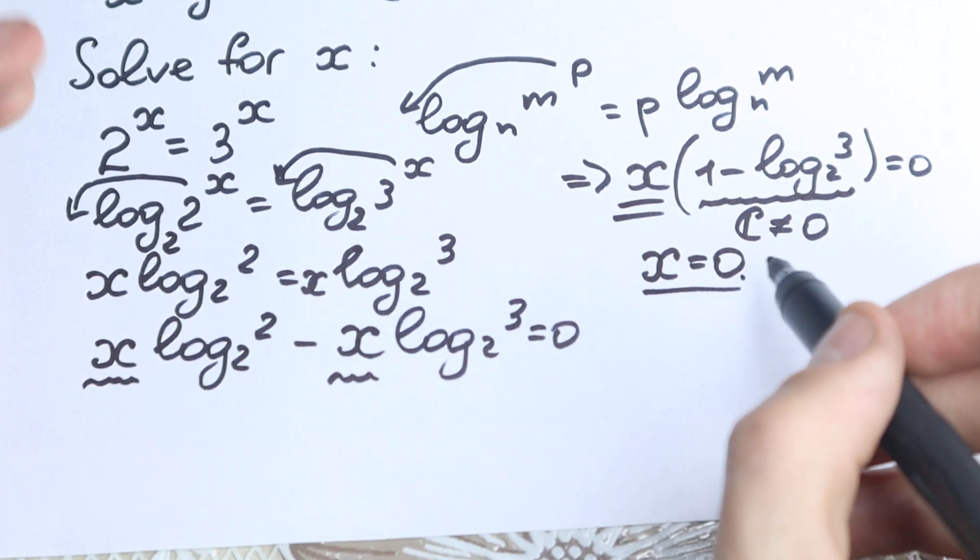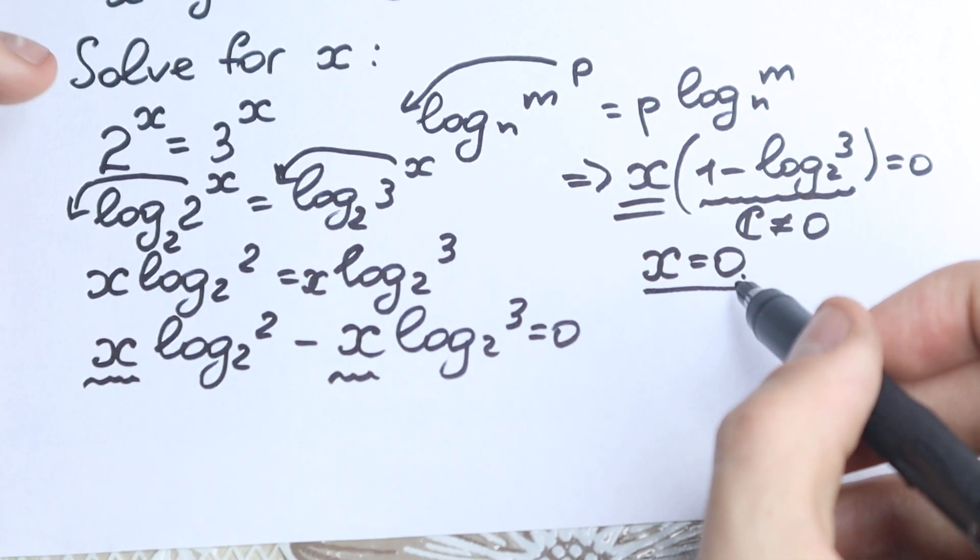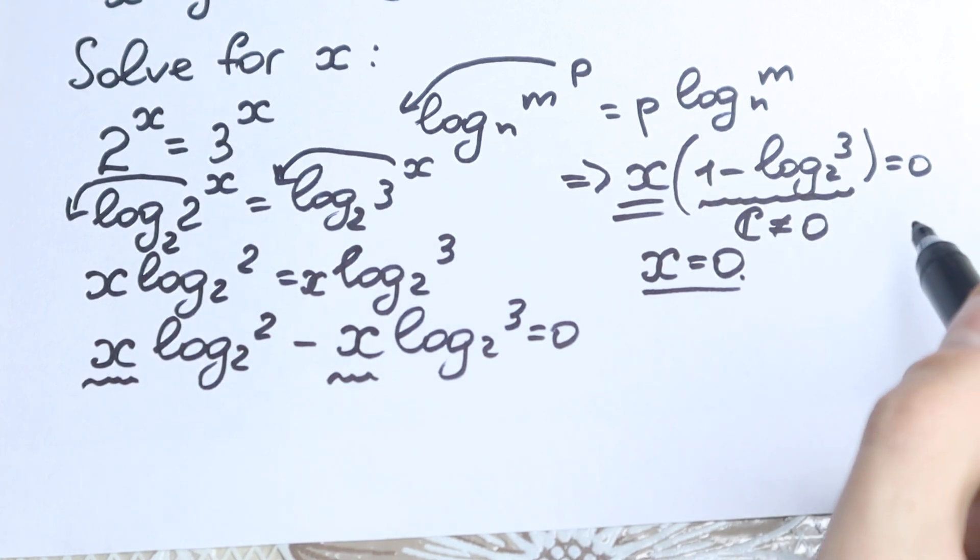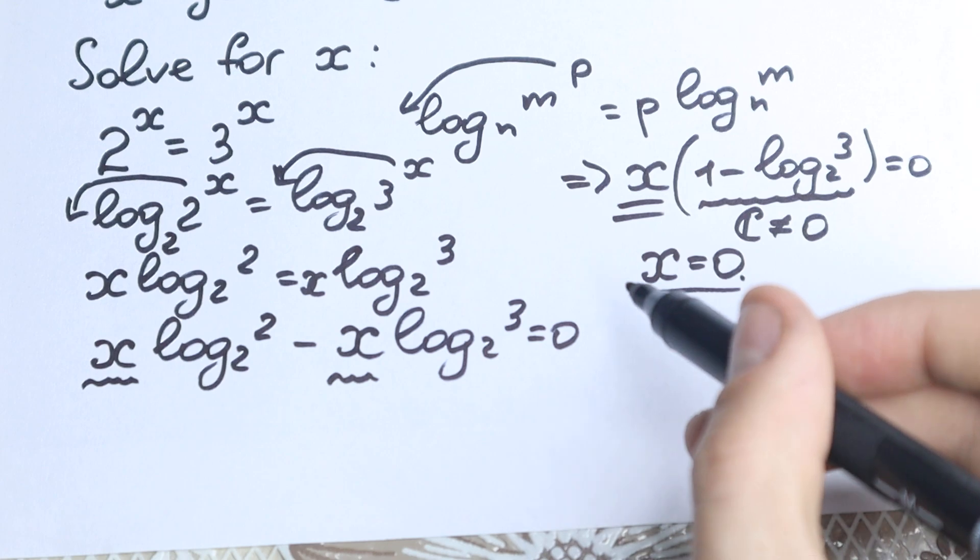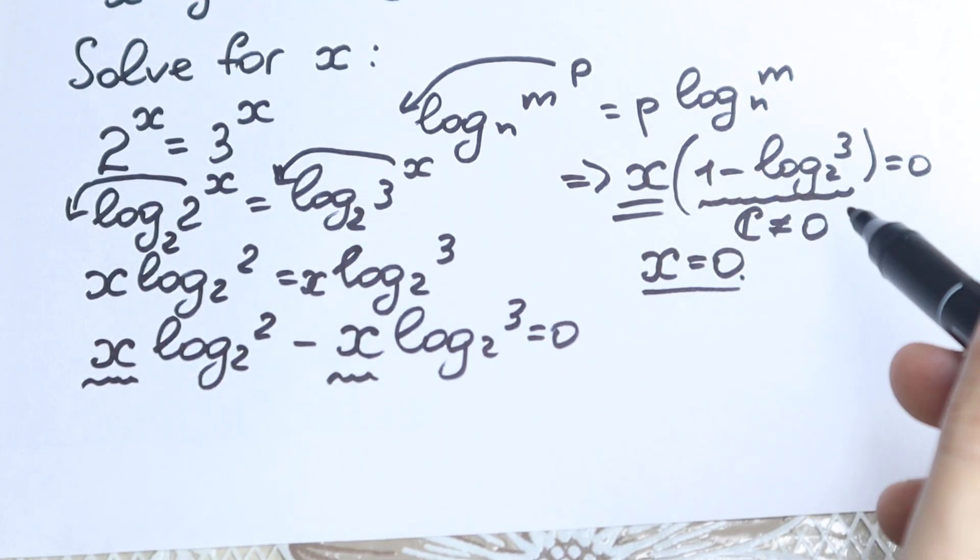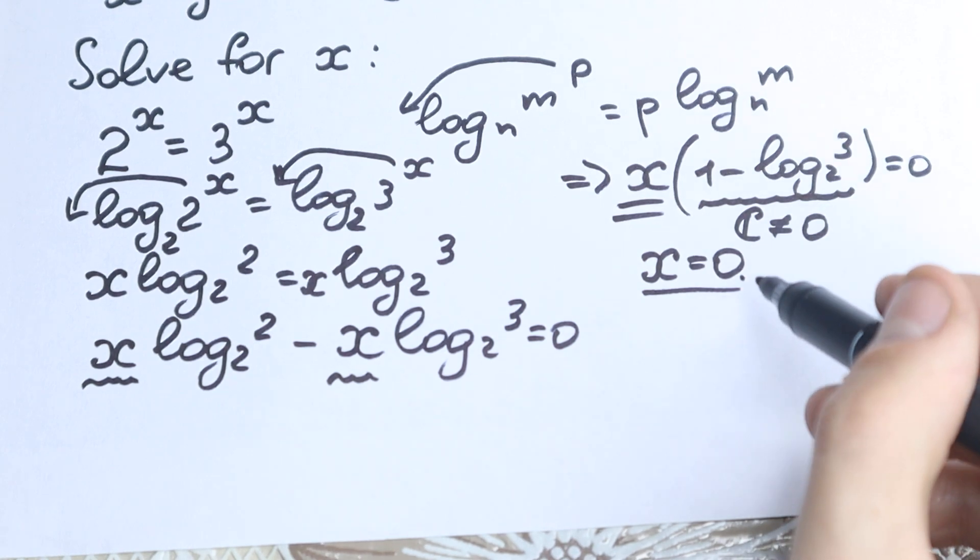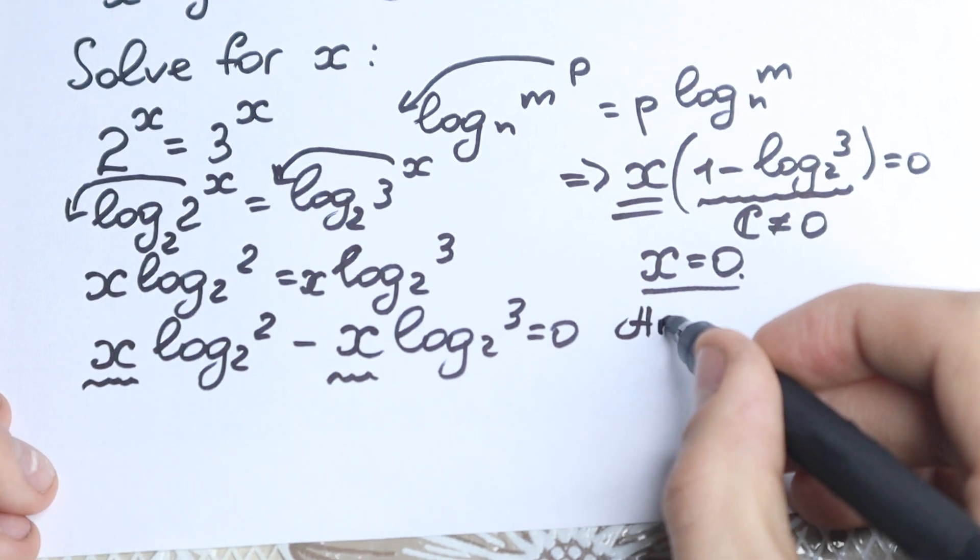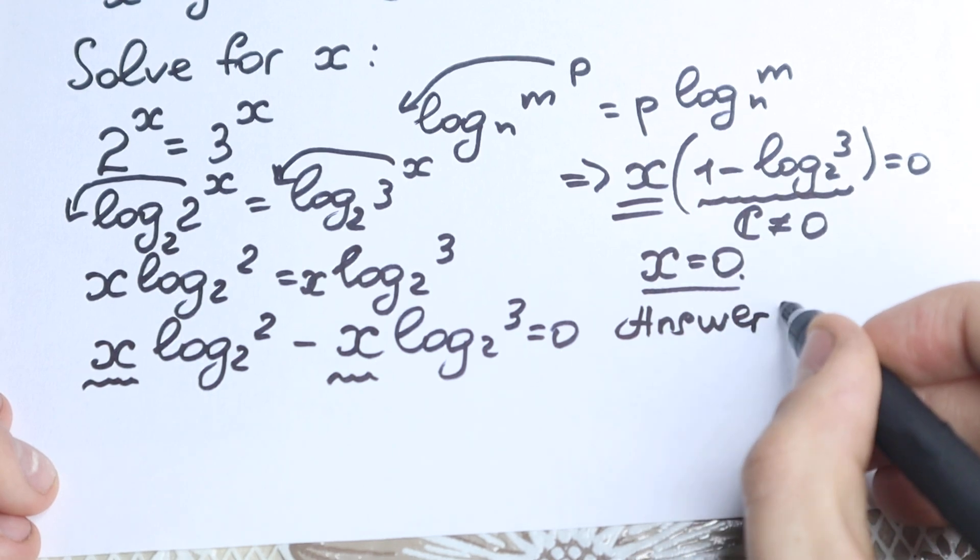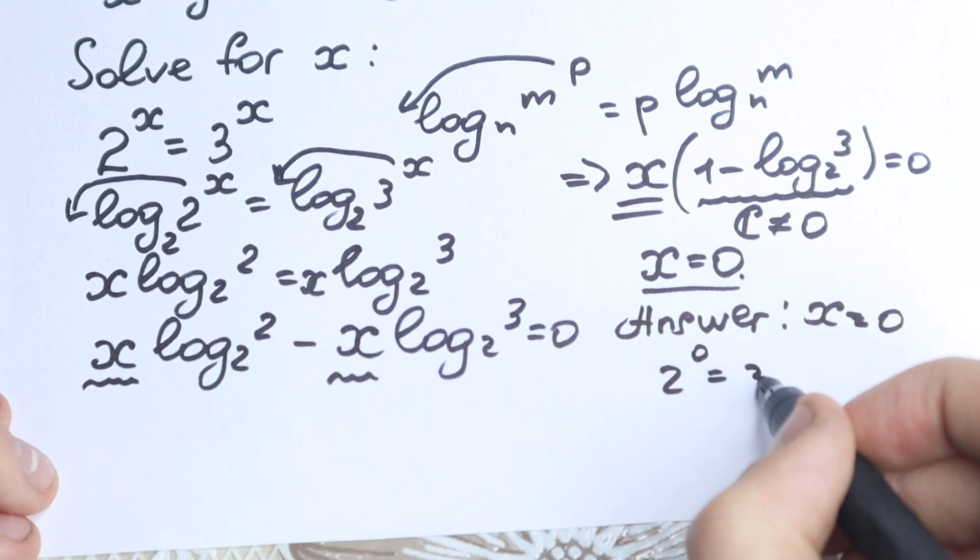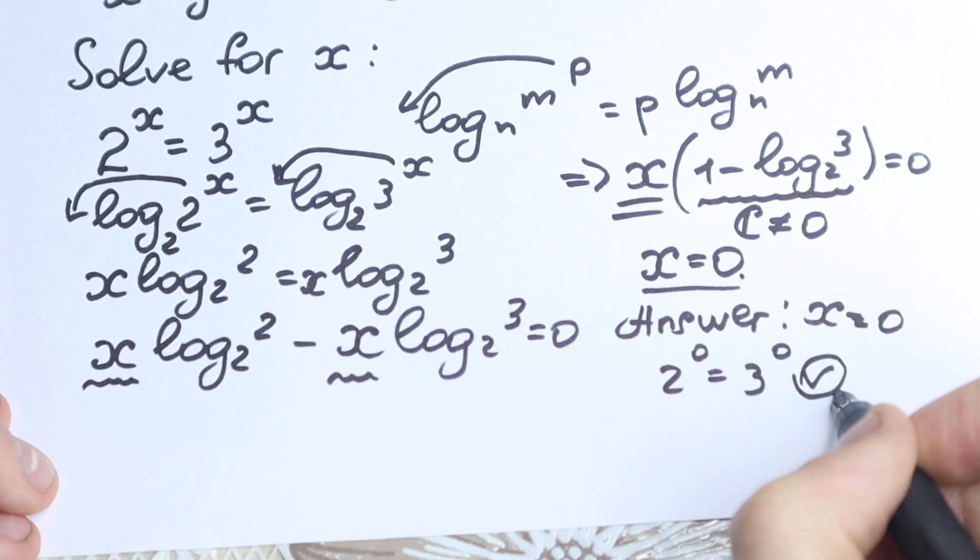Maybe someone filled this root, 2 to the 0 equals 3 to the 0. This is maybe the obvious root for most of you. But I wanted to show how we can solve this with logarithms. Maybe you know another option or another answer. It would be really interesting to read about it. Write your suggestion in the comment section. x equals 0 because 2 to the 0 equals 3 to the 0 is absolutely correct.